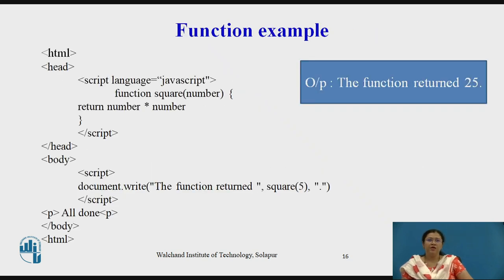Here is a function example. The name of the function is 'square', with 'number' as the argument. It returns number * number, meaning it returns the square of that number. The function is defined inside the head tag, and inside the body tag we call document.write with the function call, which returns the square of 5. So the output is 25.